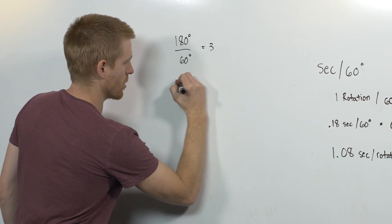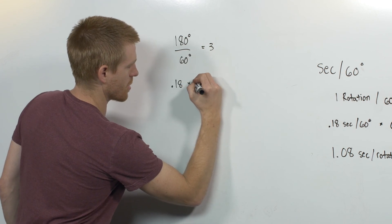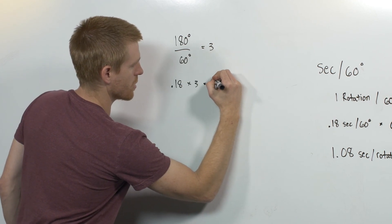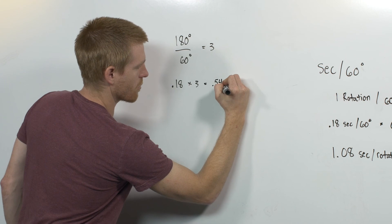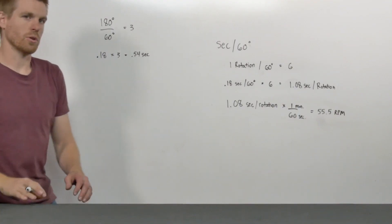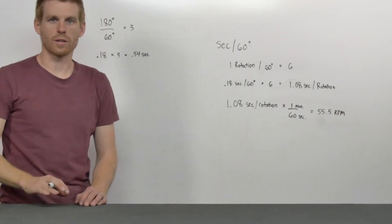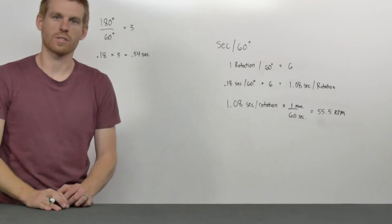So 0.18 times 3 equals 0.54 seconds. So I know the 485 is going to rotate 180 degrees in just over half a second.